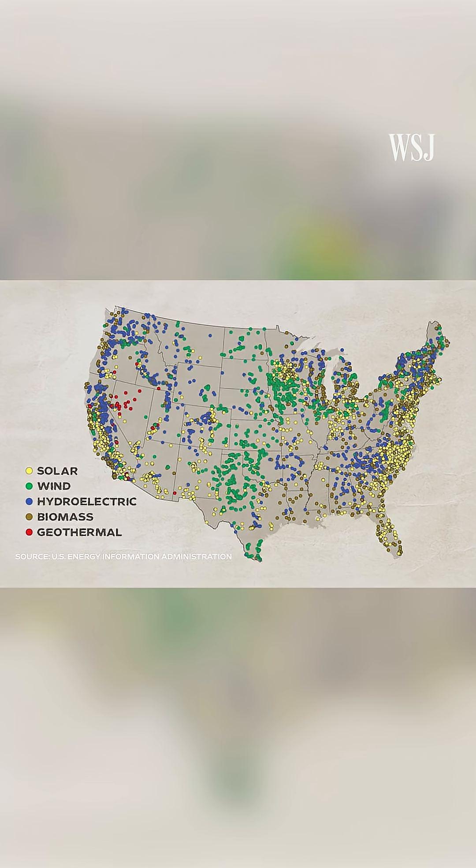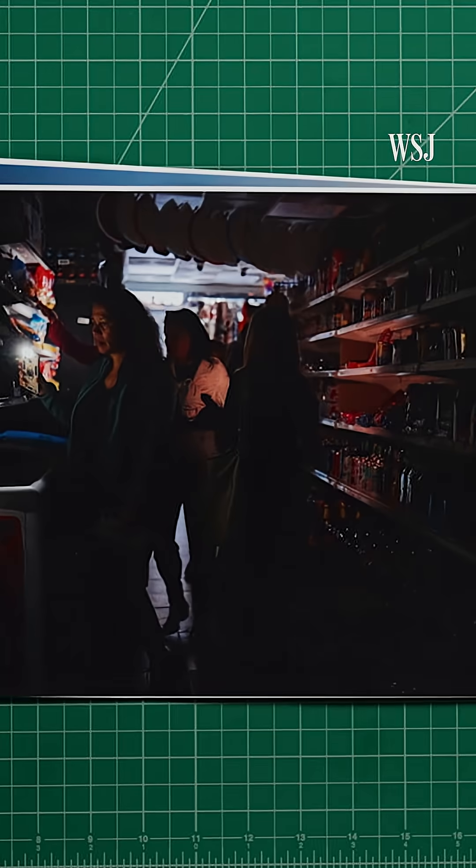As renewable energy becomes more prevalent, Todd says the key to reducing the risk of widespread outages is to keep building and improving the infrastructure supporting it.